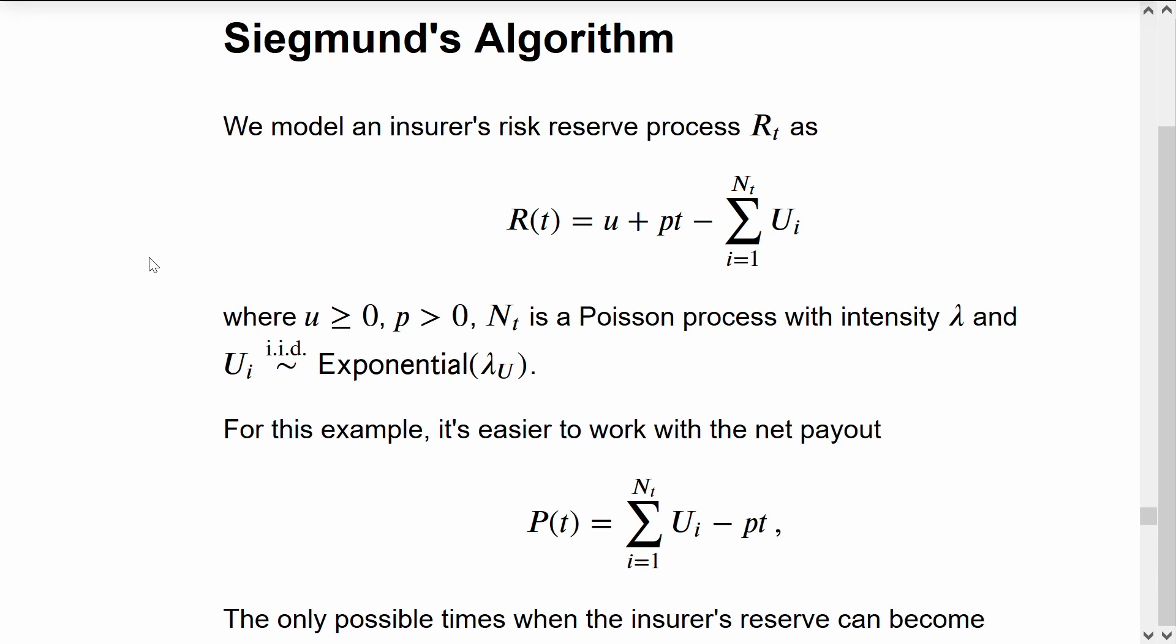What we want to do is calculate infinite time ruin probabilities. It turns out to be easier to work with the net payout process, which is the sum of the claims minus the income received.